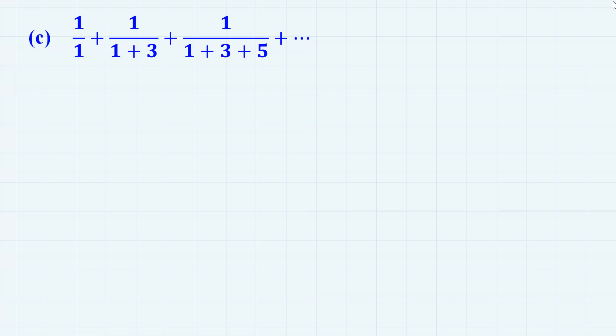Now, the third problem. Here, let us also start with the general expression for the denominator of the nth term, which is 1 plus 3 plus 5 plus so on, plus 2n minus 1, which can be written as sigma 2k minus 1 from k equals 1 to k equals n.